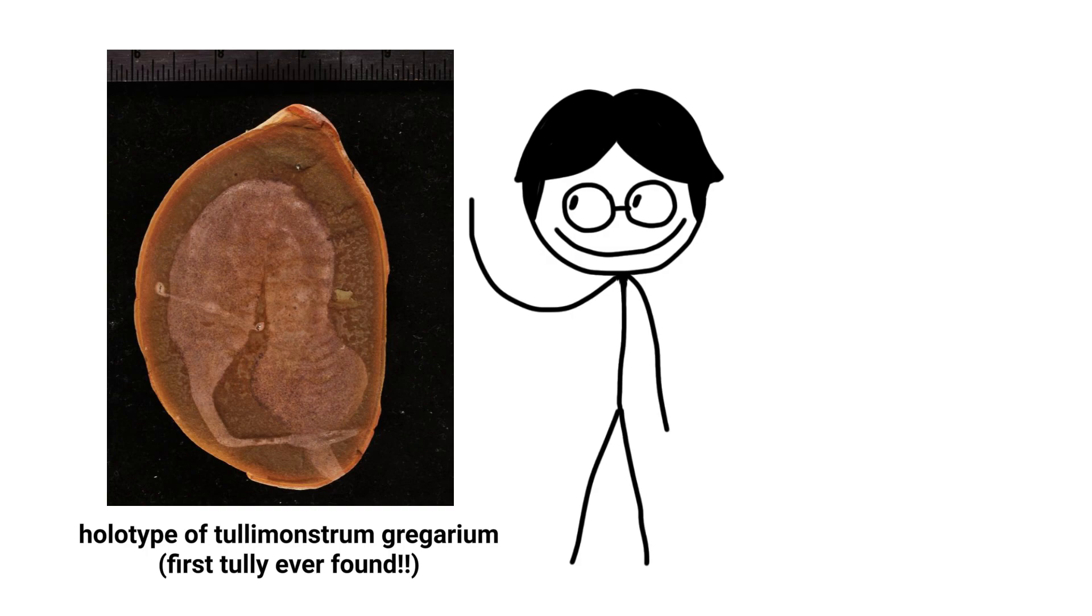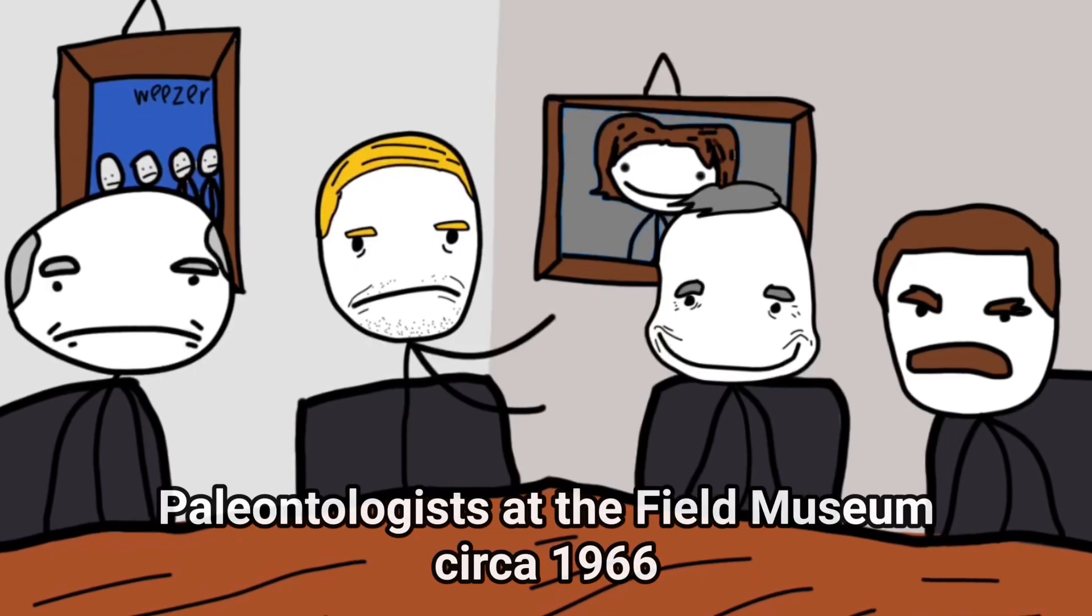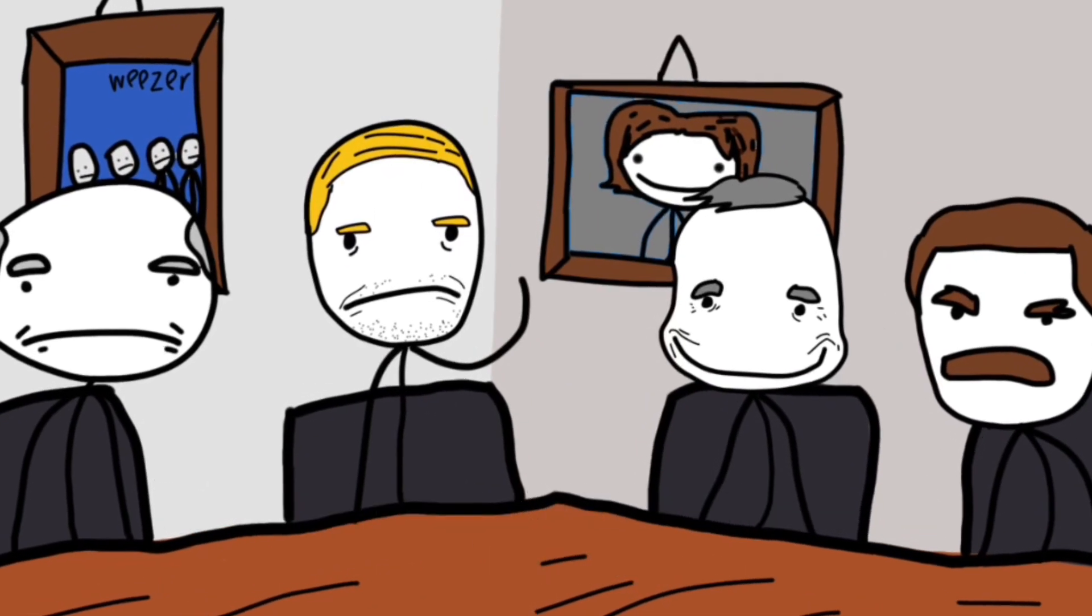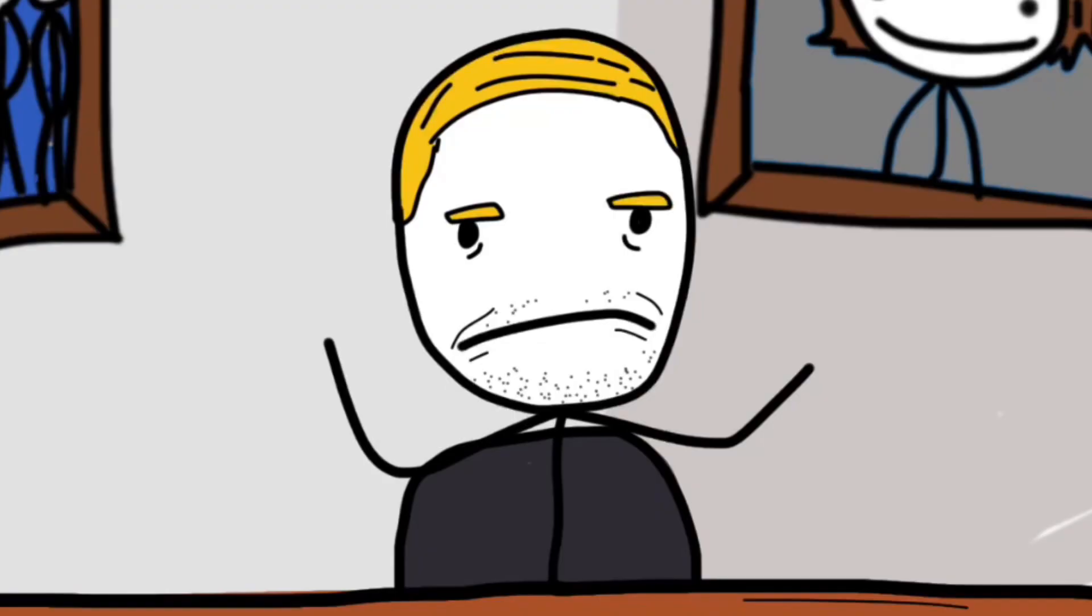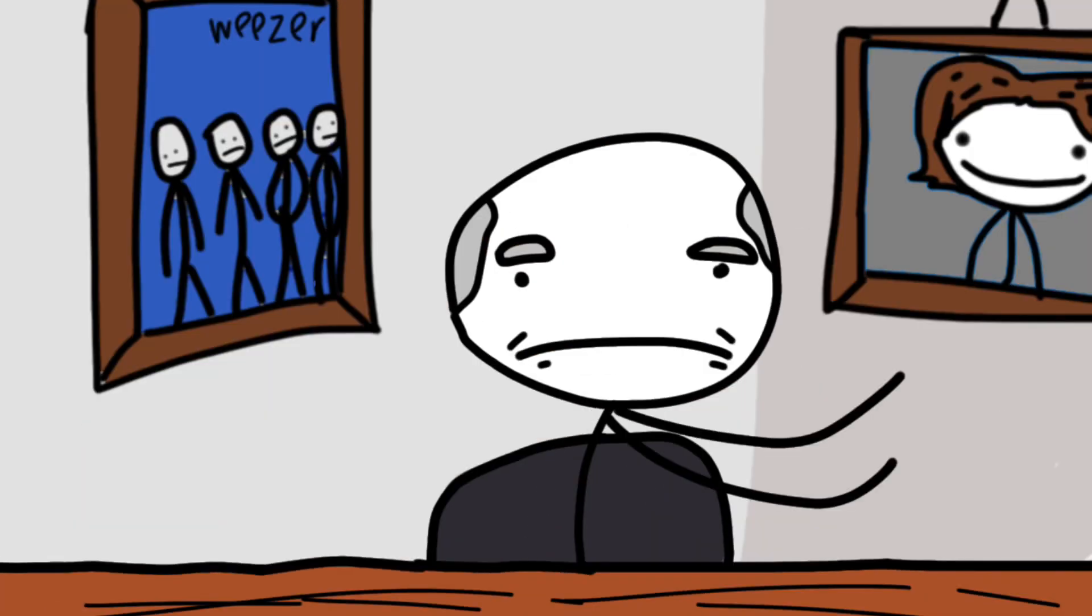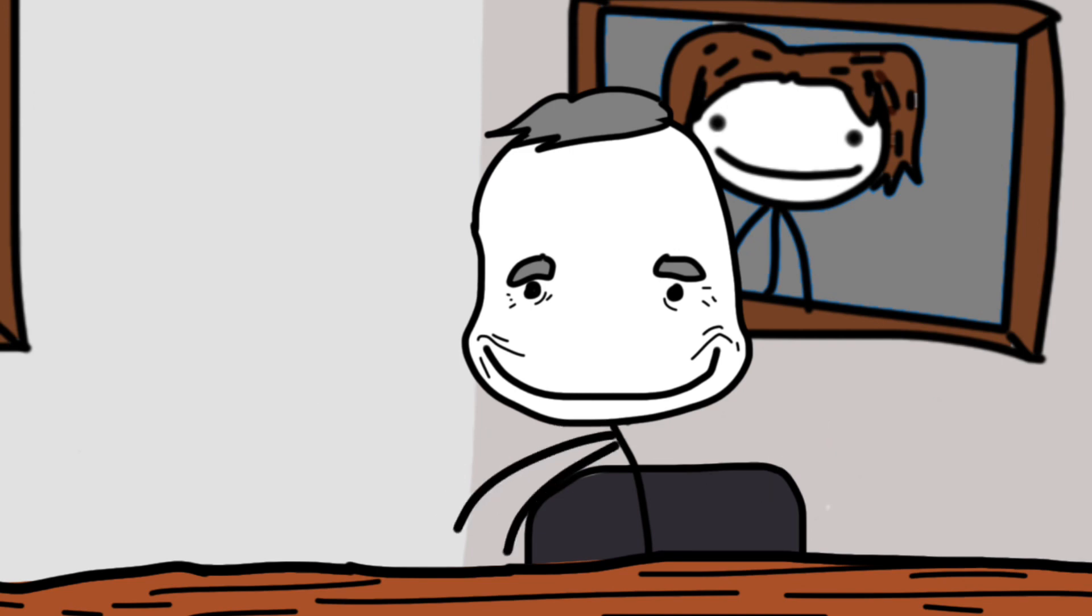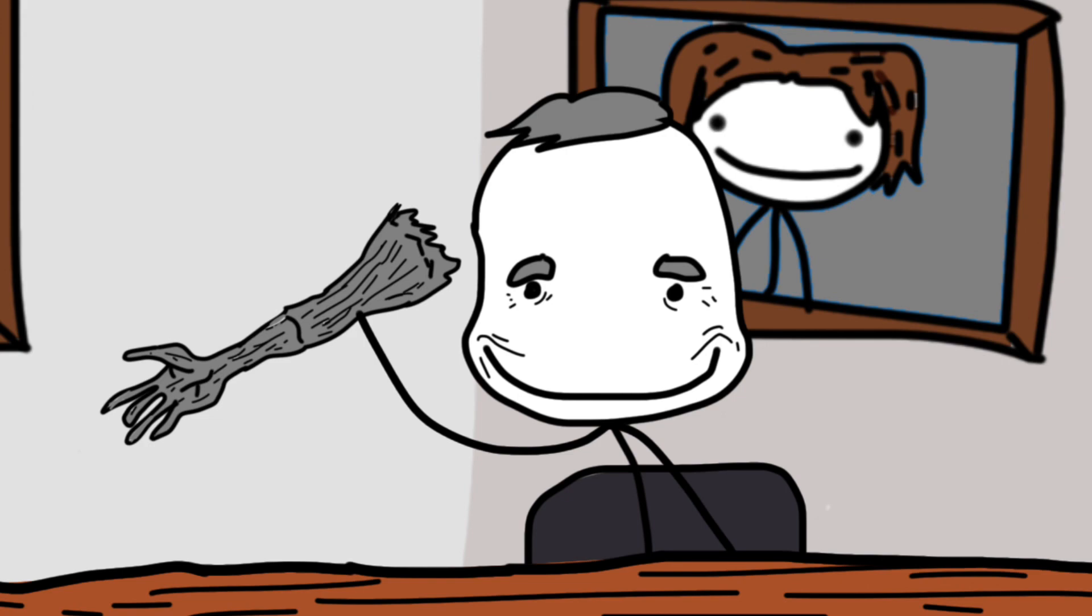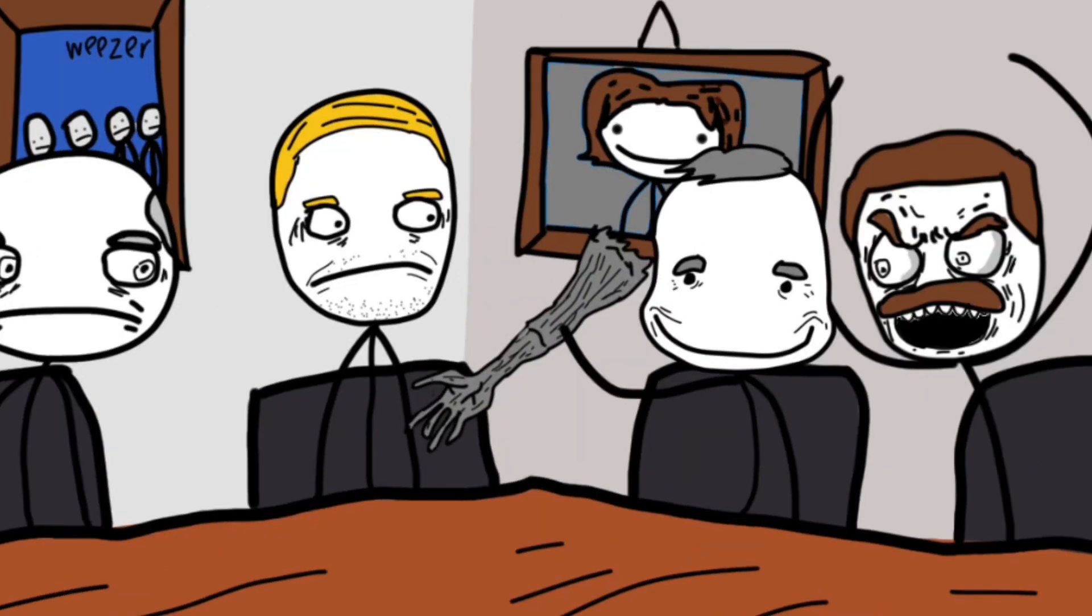See, since the discovery of their first Tully Monster fossil in 1955, paleontologists have been squabbling over how to classify this thing. I think that this is a cephalopod. No, it's definitely a fish. It could be a worm. Now, fellas, let's settle down and think rationally. This is obviously the disembodied limb of my Uncle Jimmy. Get the f*** out of here, Charles!